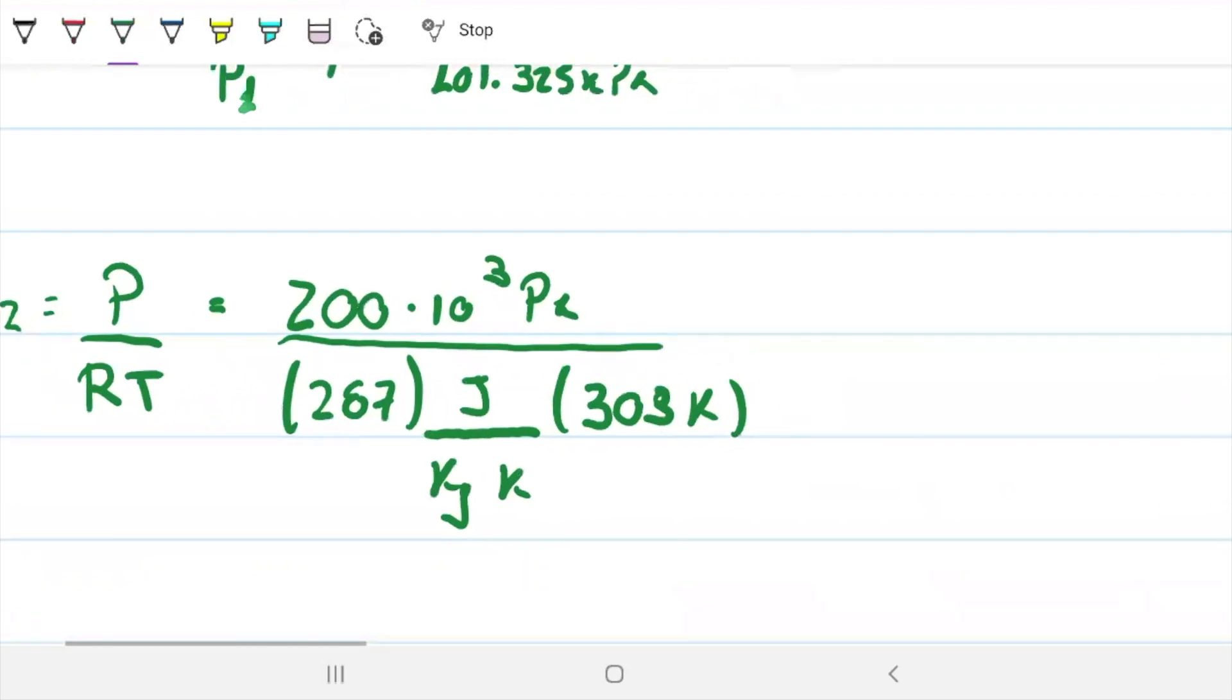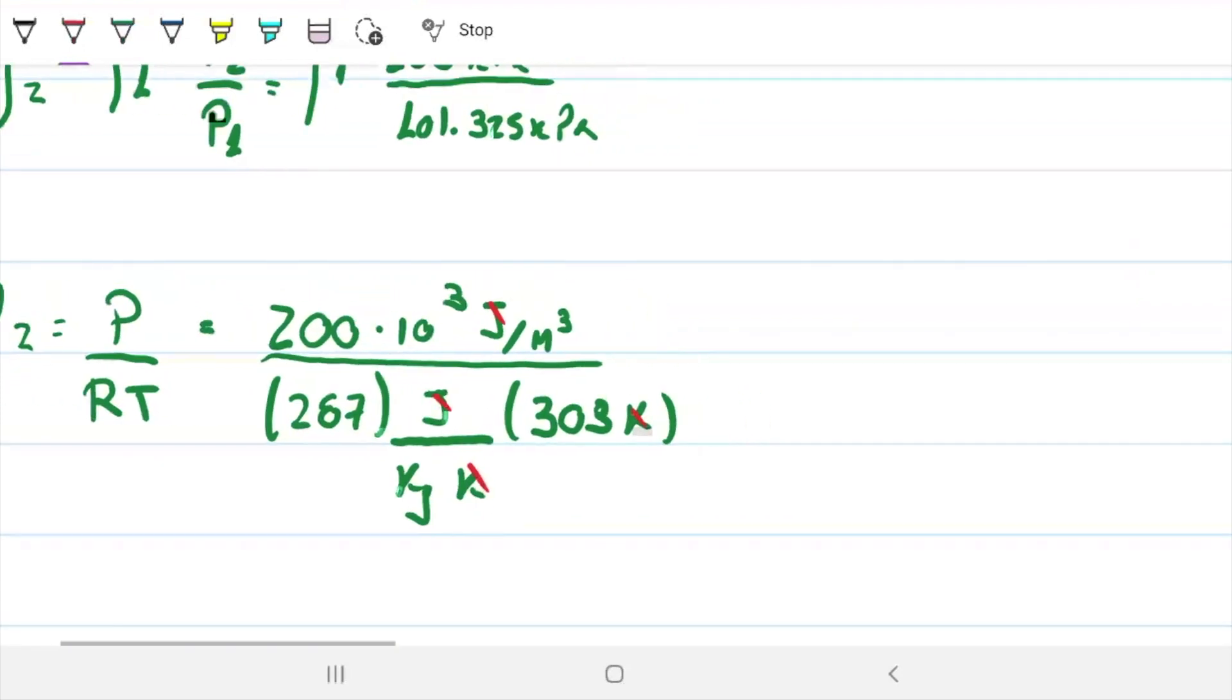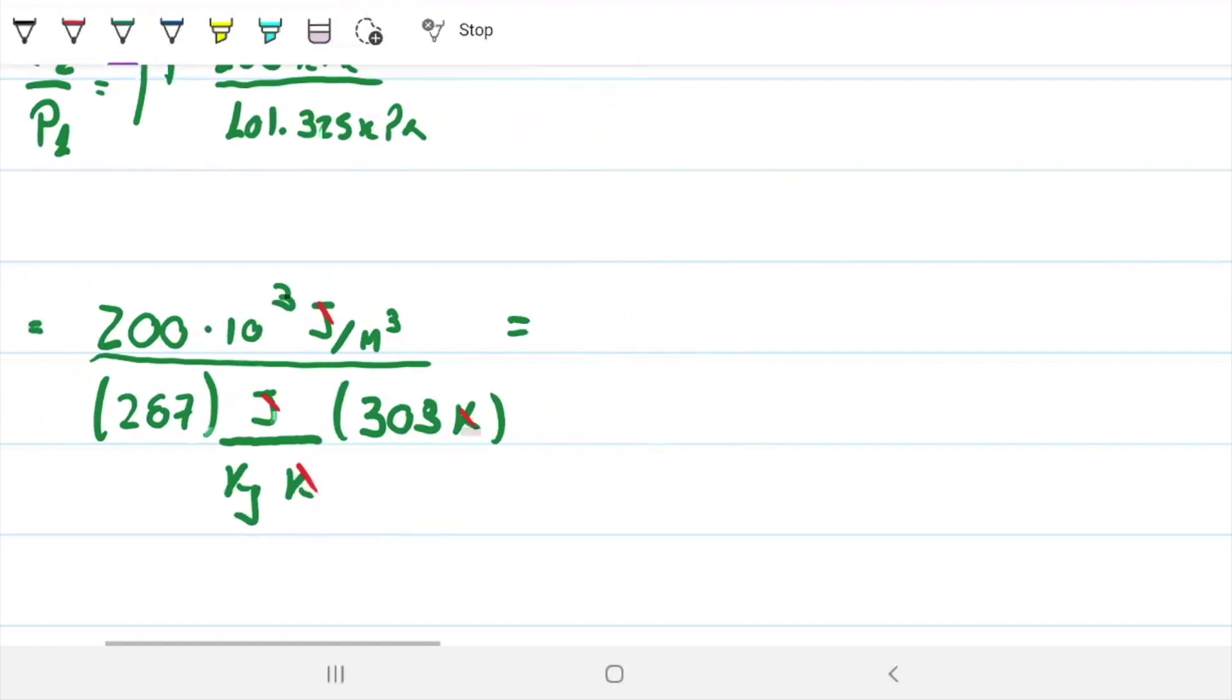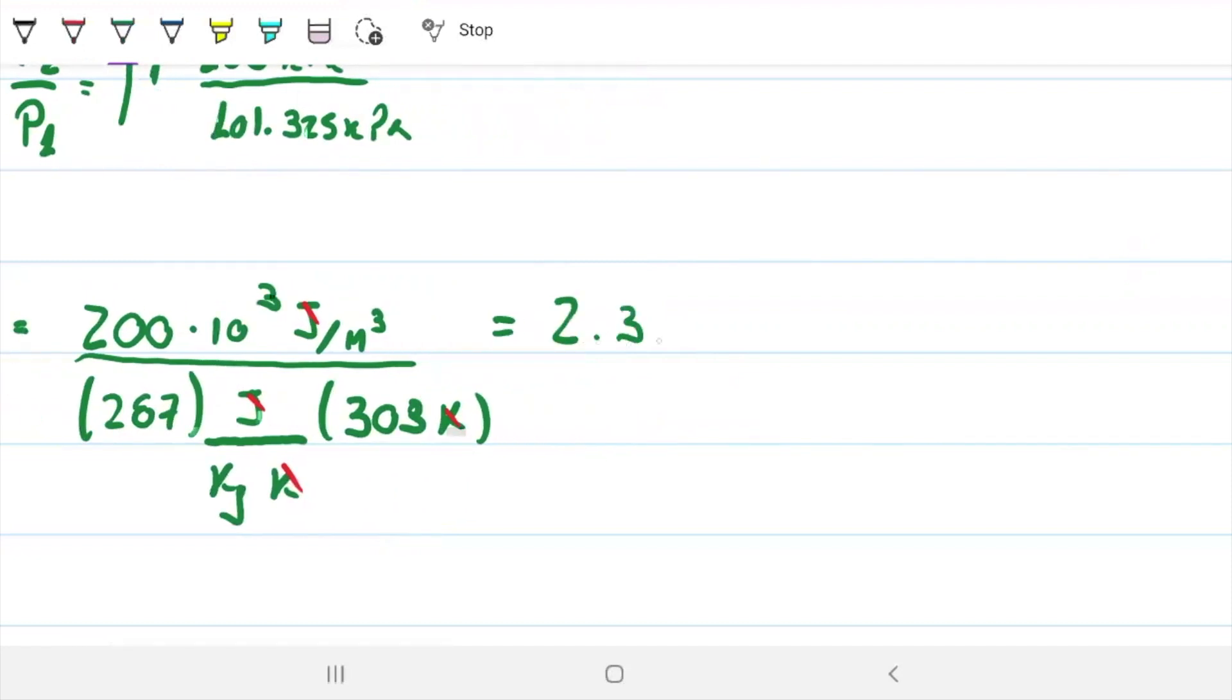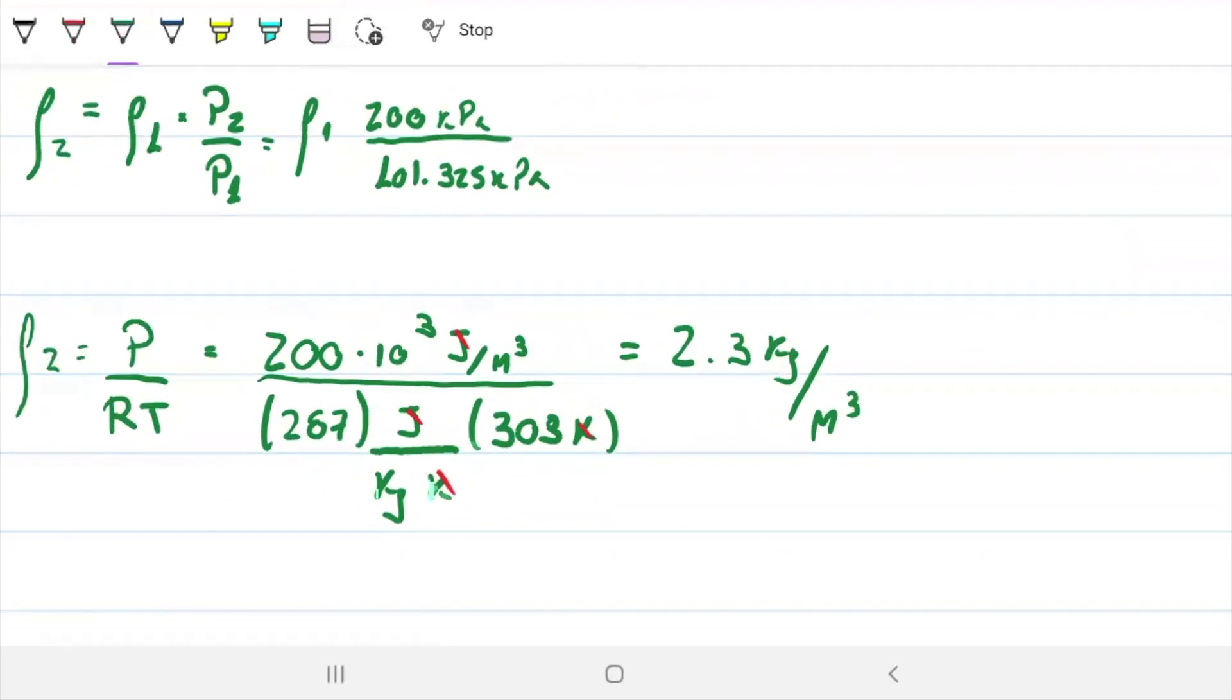Now, if you guys recall, Pascal can be written another way. Another way to write Pascal is to write as joules per meters cubed. It's the same thing. So these guys go away and then Kelvins go away and I'll be left with kilograms per meters cubed, which is brilliant because I'm looking for density. What do we get on this one? 2.3, 2.3 kilograms per meters cubed. Okay. So with that, we can find our Reynolds.